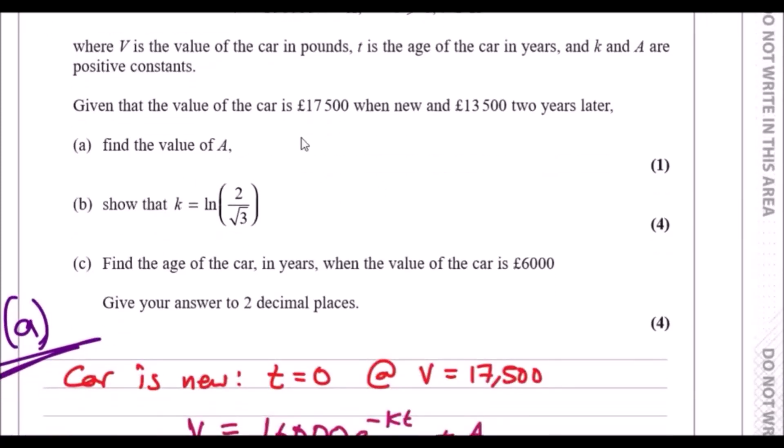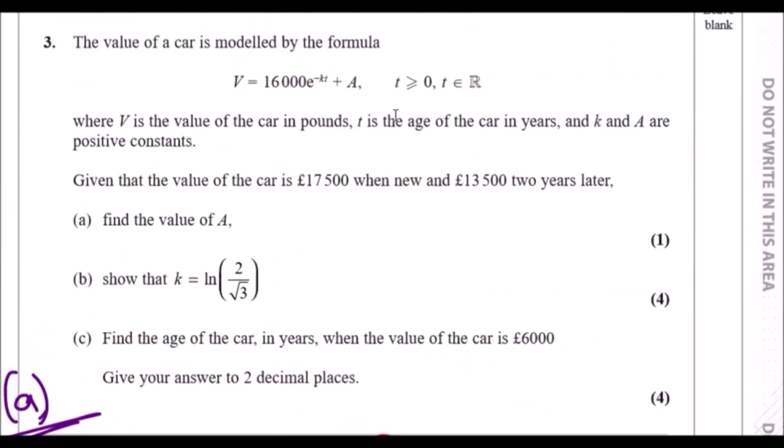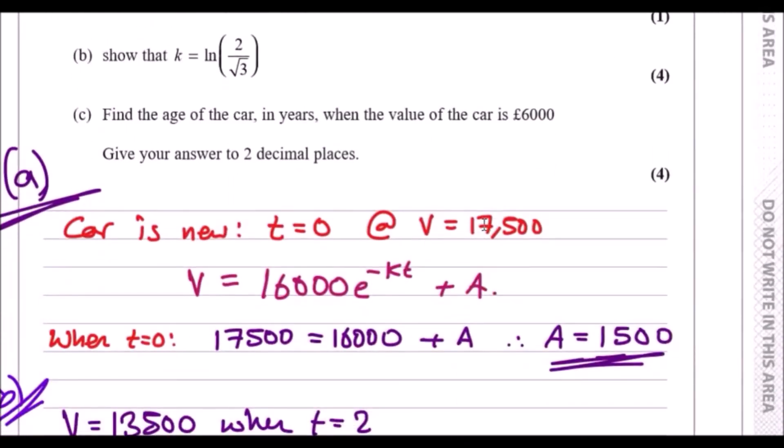For part a, since the car is new this implies t is zero, so the value costs £17,500. Use your original equation, plug in the value for V at 17,500, plug in t equals zero, rearrange and make a the subject, and voilà—1,500 quid. That's your constant for a.